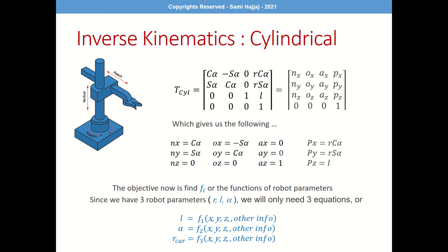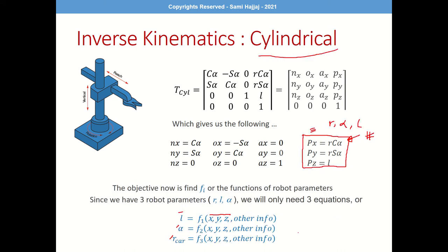Now we move on to inverse kinematics for the cylindrical robot. We developed this set of forward kinematics equations last session. This situation requires R (reach), alpha (twist), and L (height) to be given — once given, we plug in and get PX, PY, PZ. But today, we want the opposite: given X, Y, Z, find R, alpha, and L.